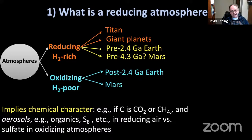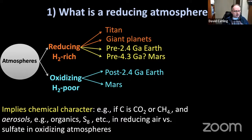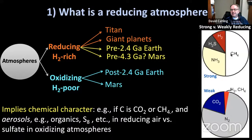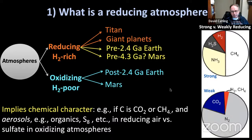This framework is useful because it indicates the chemical character — whether carbon is oxidized or hydrogenated, and whether aerosols form organics or elemental sulfur in reducing air versus sulfate in oxidizing atmospheres. It's also useful to distinguish strongly versus weakly reducing: at the top we have highly hydrogenated forms of nitrogen and carbon — strongly reducing — while at the bottom predominantly oxidized forms of nitrogen and carbon with minor methane represent a weakly reducing atmosphere.